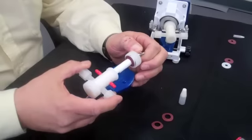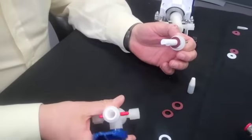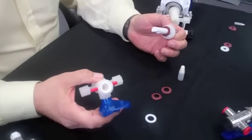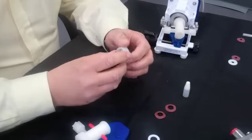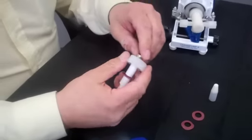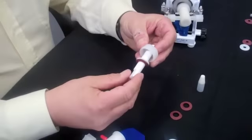Pull the piston gland nut and seals off as one assembly. So here you have the ceramic liner in the pump housing and carrier assembly. And here what we have is the piston.